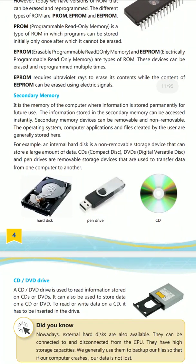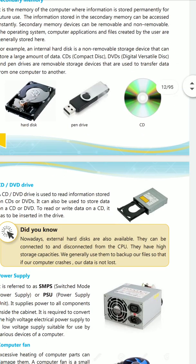Secondary memory refers to memory devices that can be removed from the computer. Examples include hard disk, pen drive, and CD. These devices store data permanently until the user deletes it — that is called secondary memory. Devices can be removable or non-removable. The operating system, applications, and files are generally stored on the hard disk drive placed inside the CPU. Nowadays, you can also get portable hard disk drives that can be removed from the CPU.